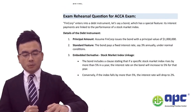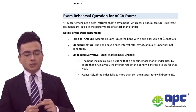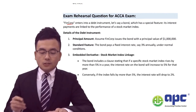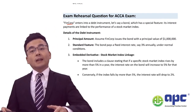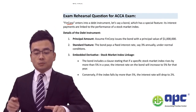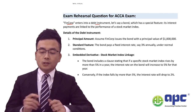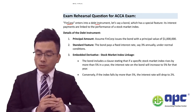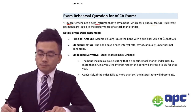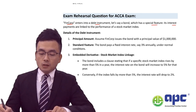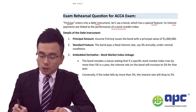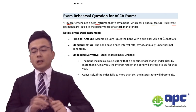Let's see an example here. Fin Corp enters into a debt instrument, which means it lends money to others. The bond has a special feature: the interest payment is linked to the performance of a stock market index.